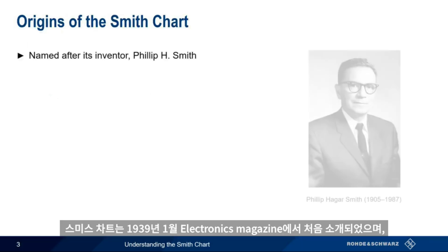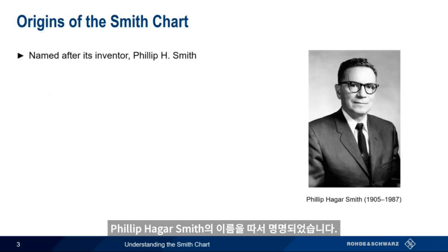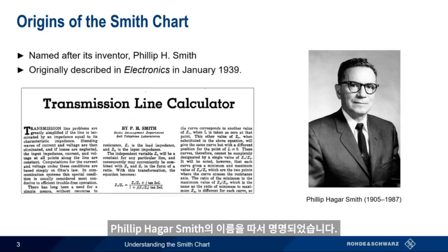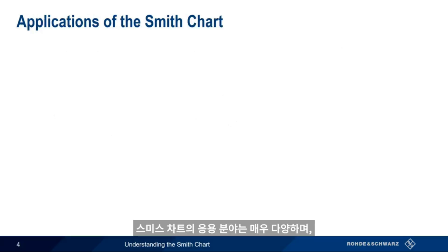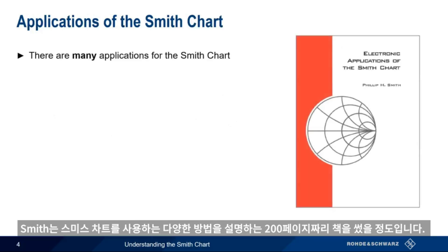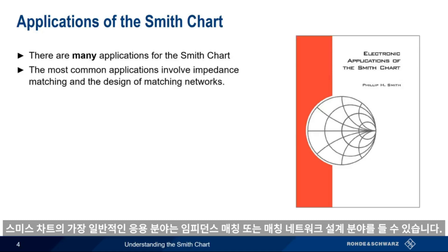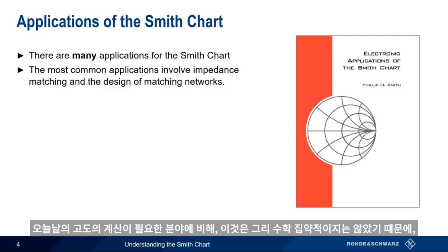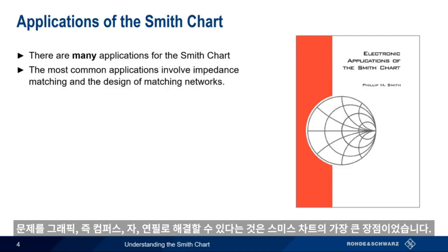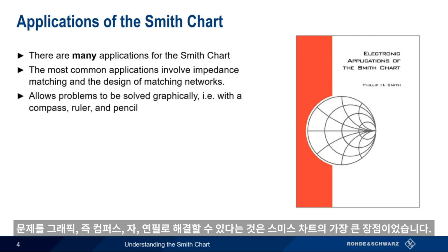The Smith Chart is named after its inventor, Philip Hager Smith, who originally described it in an article in Electronics Magazine in January 1939. There are many applications of the Smith Chart. Smith himself wrote a 200-page book describing different ways of using his creation. The most common applications involve impedance matching or the design of matching networks. Before modern computational resources, this was a non-trivial, math-intensive task, so the greatest advantage of the Smith Chart was that it allowed problems to be solved graphically — that is, with a compass, a ruler, and a pencil.